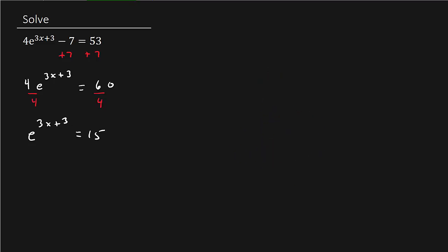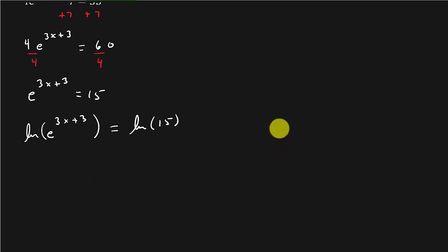You can take the log of both sides or you can take the natural log of both sides. I usually just always take the natural log of both sides. Most cases that's the best, to me that's the best thing to do. So now that we've taken the natural log of both sides, this just gives me 3x plus 3 equals natural log of 15.